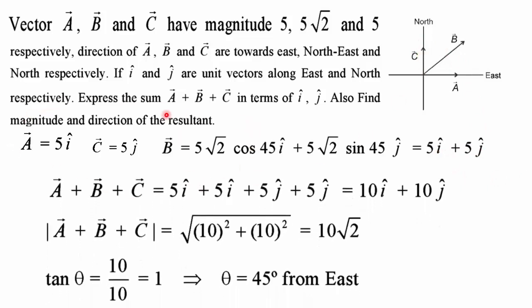Taking the sum A plus B plus C, we get 10 i plus 10 j. The magnitude is the square root of 10 squared plus 10 squared, which equals 10 root 2. The direction theta is given by the arctangent of the y-component over the x-component, that is arctan(10/10) equals arctan(1), so theta equals 45 degrees. This concludes the lecture on resolution of vectors.